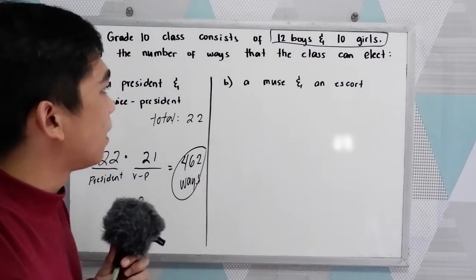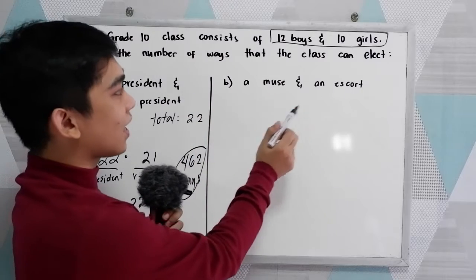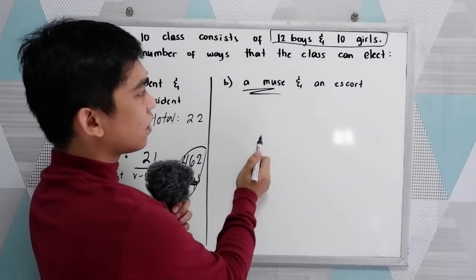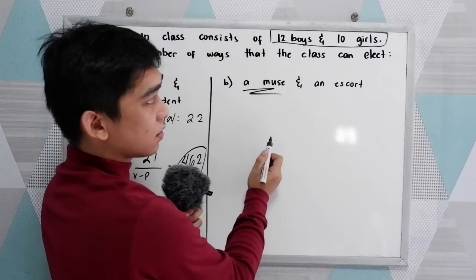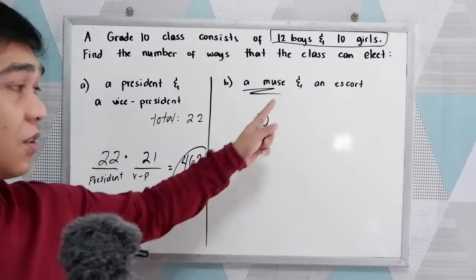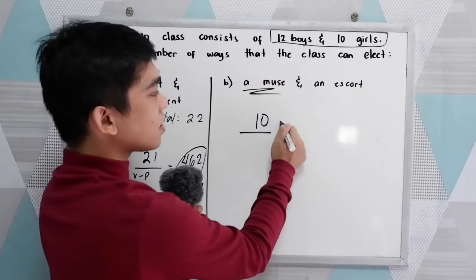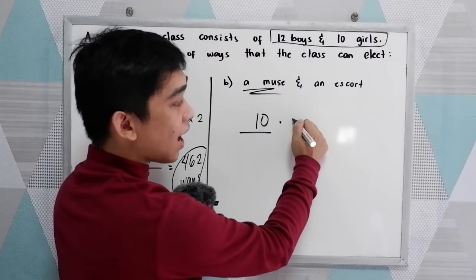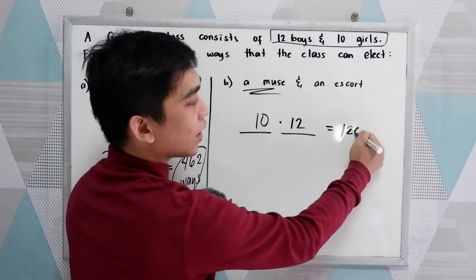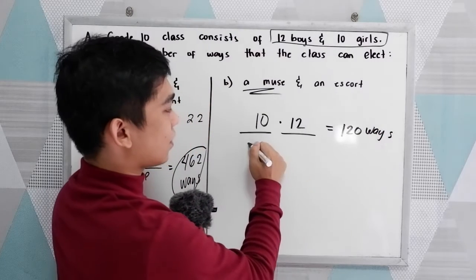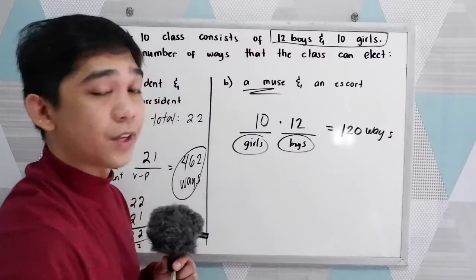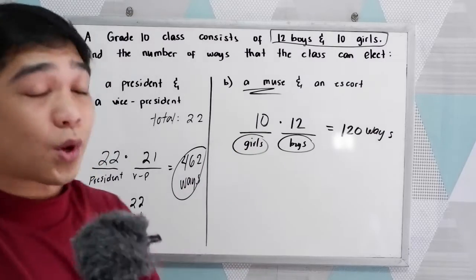For letter B, find the number of ways to elect a muse and an escort. For the muse, all 10 girls can run, so we have 10. For the escort, all 12 boys can run. So 10 times 12 equals 120 possible ways.